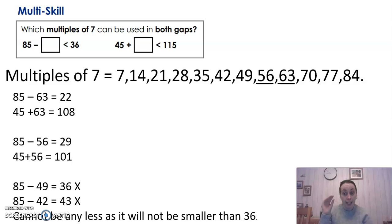So I started off with 85 take away 63 equals 22. 22 is less than 36, so it works. Then I have to check it in the other box. 45 add 63 is 108. 108 is less than 115. So it works for both. Hooray!